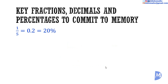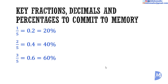One fifth is equal to 0.2, which is equal to 20%. We know that 5 multiplied by 20 is equal to 100, and 1 multiplied by 20 is equal to 20, so one fifth is equal to 20 over 100. Expressing it over 100 makes it much easier to remember the decimal and percentage equivalent — that's my trick. The other fifths follow easily: two fifths is 40 over 100, three fifths is 60 over 100, and four fifths is 80 over 100.